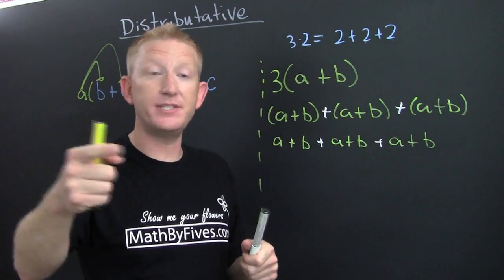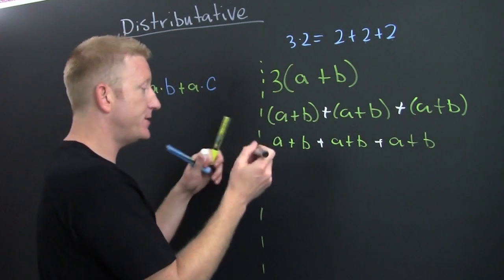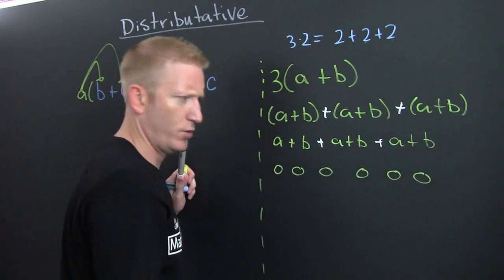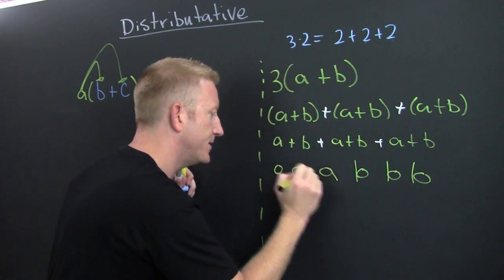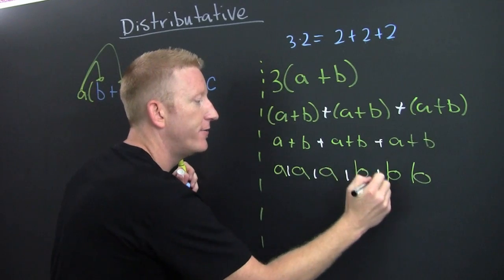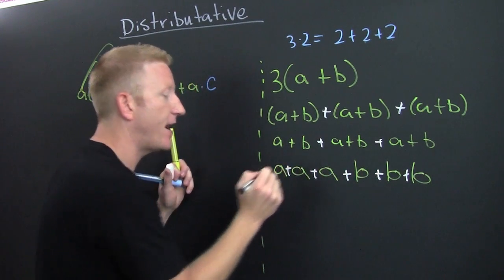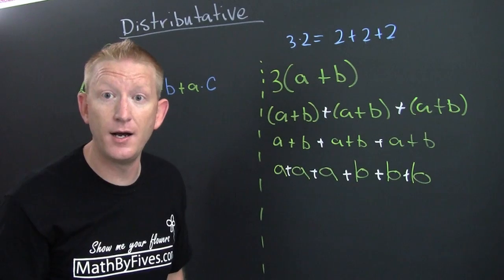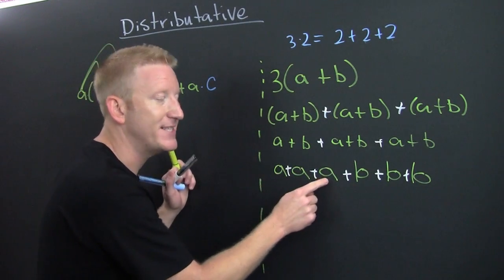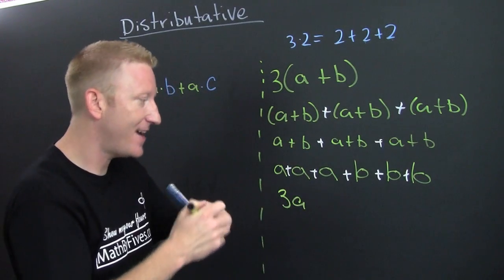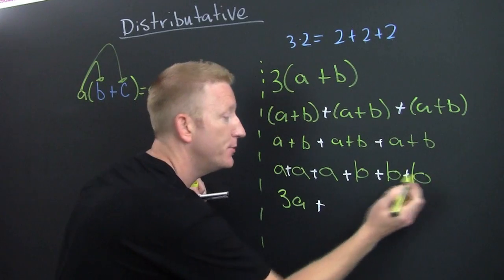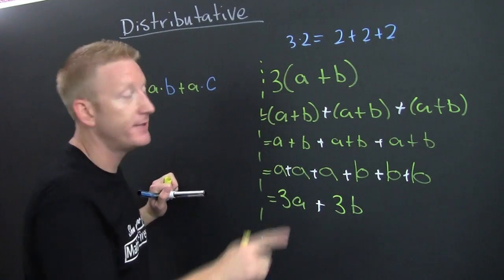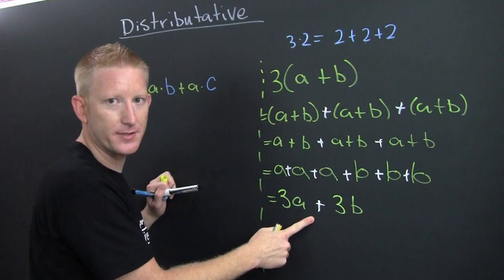We can use our commutative property — we can commute those guys and rewrite them in any order. When we do, we see a, a, a, b, b, b. One two three, one two three. I've written all my a's first to collect and combine like terms. I see three a's plus — wait for it — one two three b's. That gives us three a plus three b. That's the distributive property.